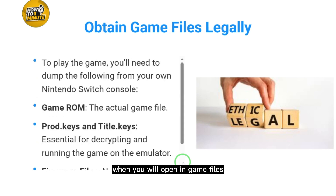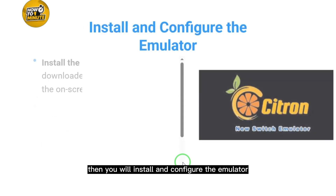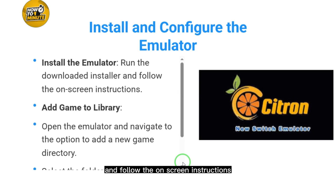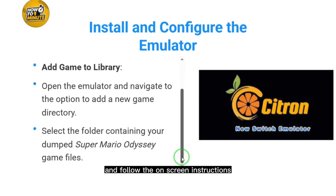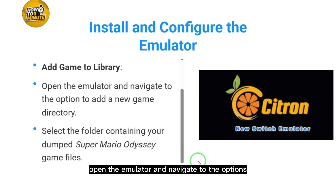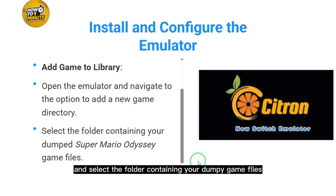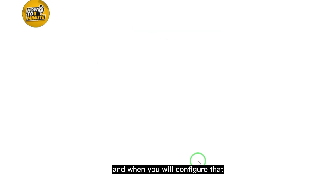After obtaining the game files, install and configure the emulator. Run the downloaded installer and follow the on-screen instructions. Then open the emulator, navigate to the options to add a new game directory, and select the folder containing your dumped game files.